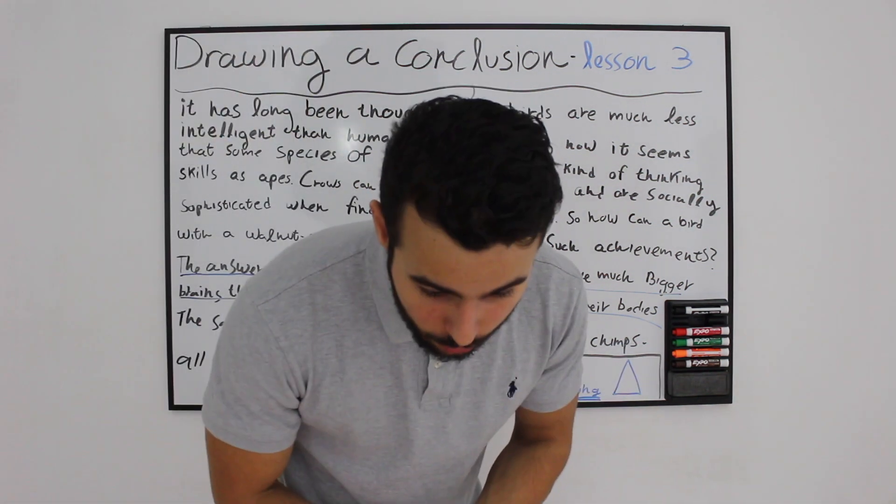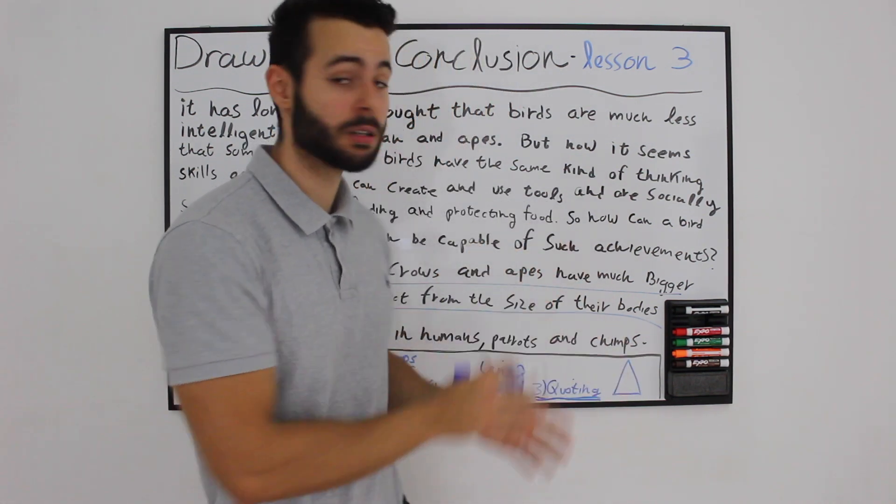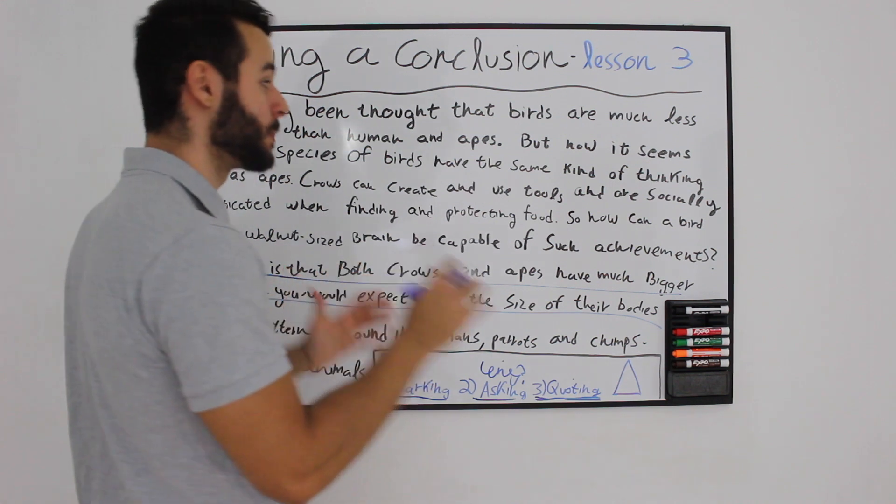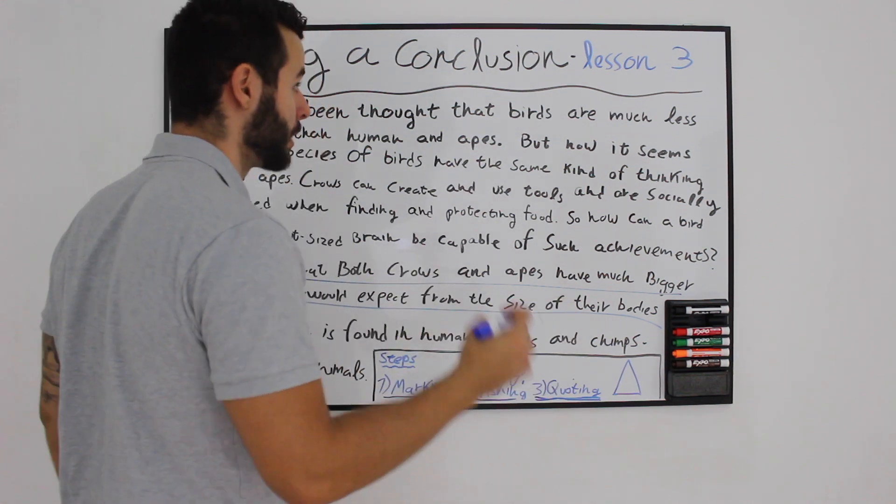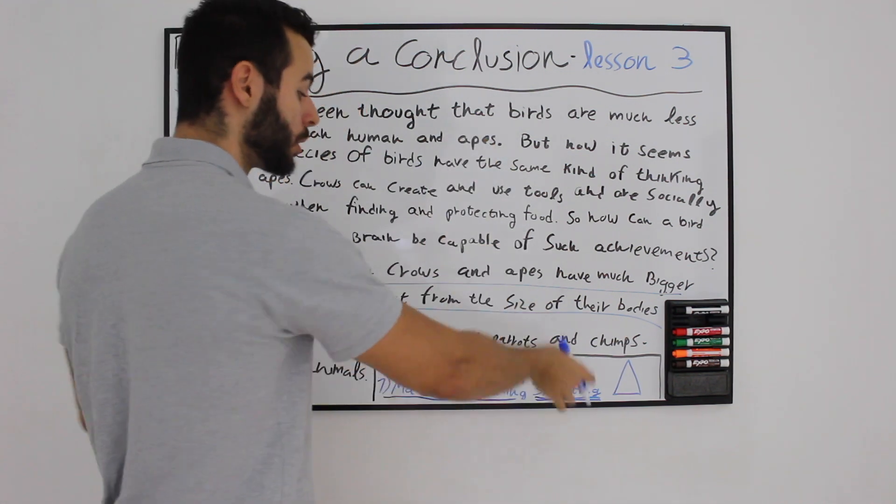It could be argued that birds are as intelligent as apes. Again, no one says it, just dismiss it. If no one says it, just dismiss it. This is the most important tip I'm going to give you for drawing a conclusion. It has to be quoted and it has to be possible to actually take something from inside the text and base your answer on it.